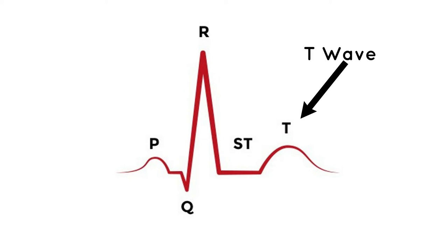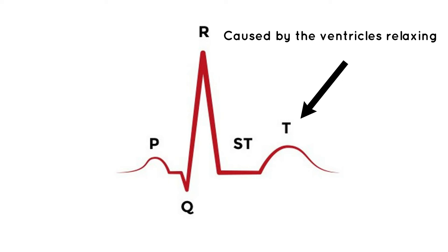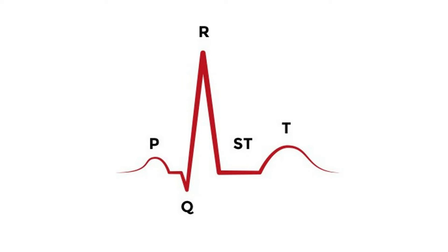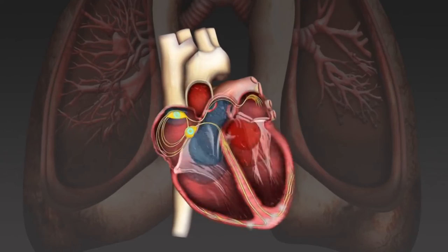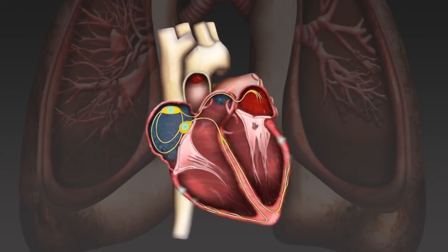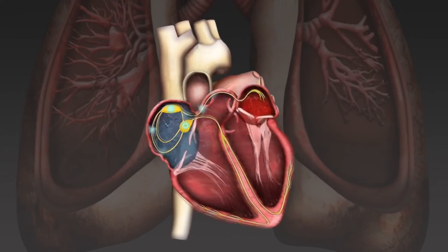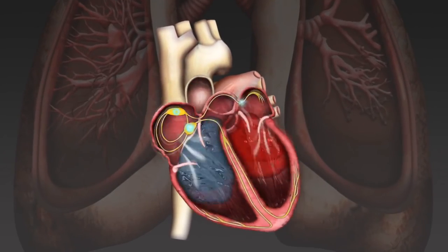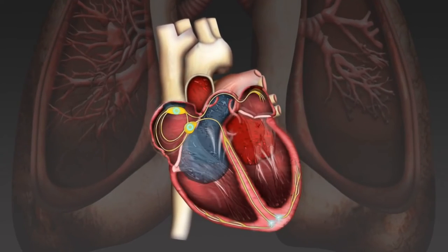The third wave is the T wave. After this spike, you will see a bump shortly after the complex. This bump is called the T wave and is caused by the ventricles relaxing. The ventricles are so large that when they contract, or depolarize, they form a large electrical impulse that presents as the QRS complex. Therefore, because they are so large, when they relax, or repolarize, they form a small electrical impulse that presents as the T wave.